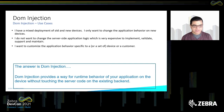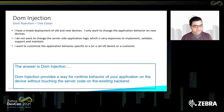With DOM Injection, you create a configuration file in Enterprise Browser and push it to the devices that need it. During runtime, Enterprise Browser reads these DOM injection files and changes the behavior without you having to change the server code on the existing backend.